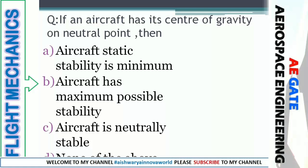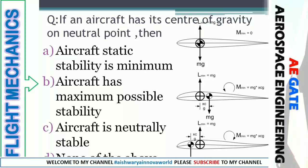If an aircraft has its center of gravity at the neutral point, the options are: aircraft's static stability is minimum, aircraft has maximum possible stability, aircraft is neutrally stable, or none of the other. When the CG lies on the neutral point, the pitching moment becomes zero, so the aircraft is neutrally stable. The right answer is option C.